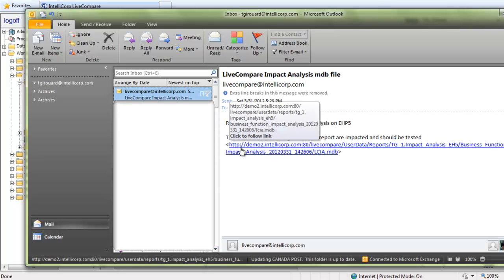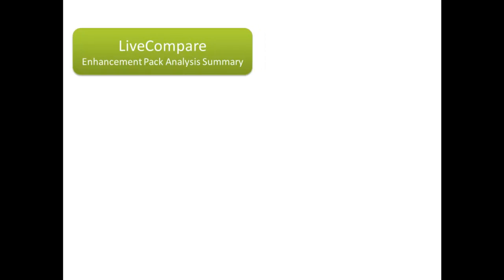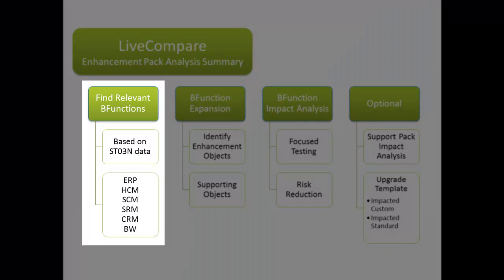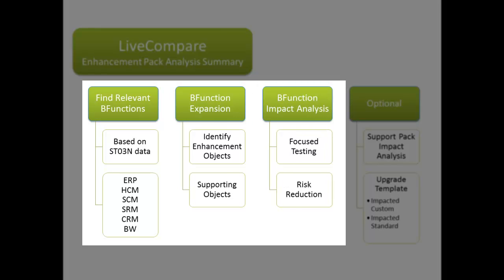And here it is — just click on the link and view the report. In summary, Live Compare has three workflows that help answer the most critical questions of your enhancement pack project. By analyzing performance history data, Live Compare can suggest business functions to consider, then identifies the key objects contained within the business function packages, and performs an impact analysis, helping you avoid full regression testing and reducing the risk of activating functionality before testing it.